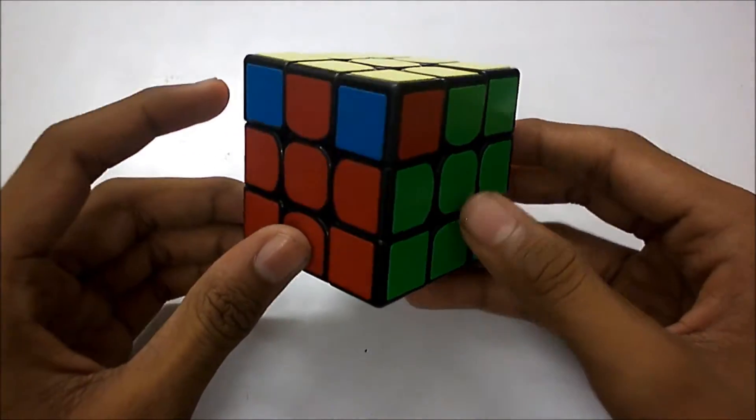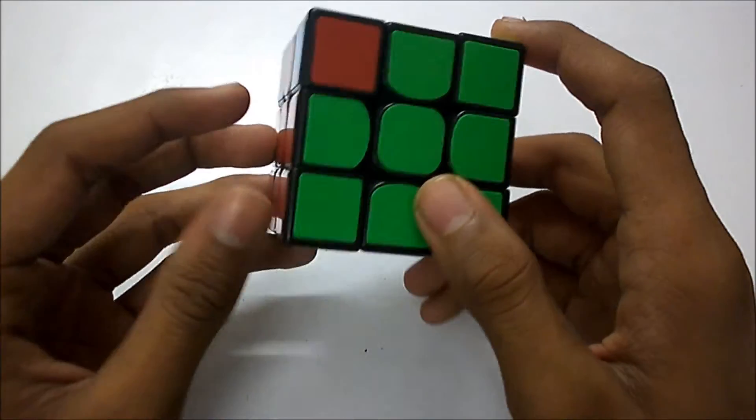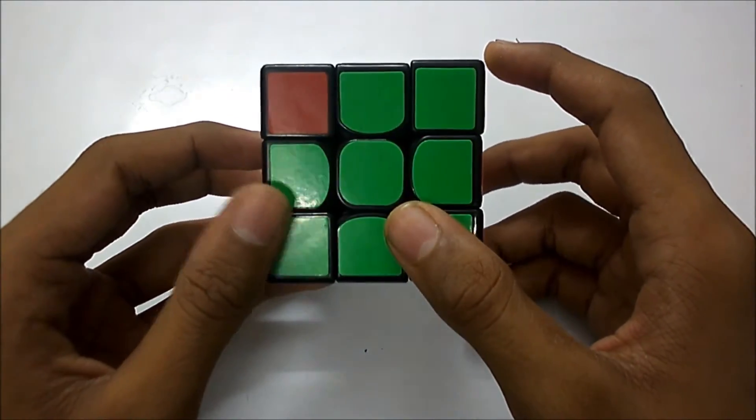Holding the cube like this with these headlights on the left and this block on your right, you do the T-perm but with wide R's.